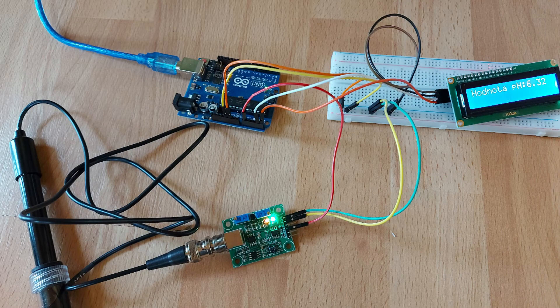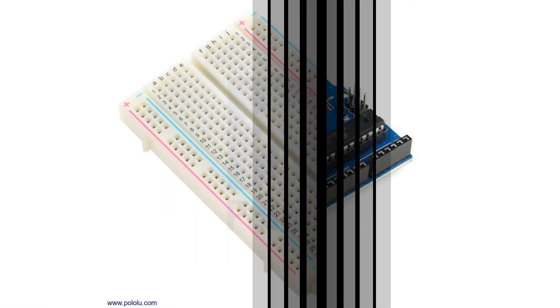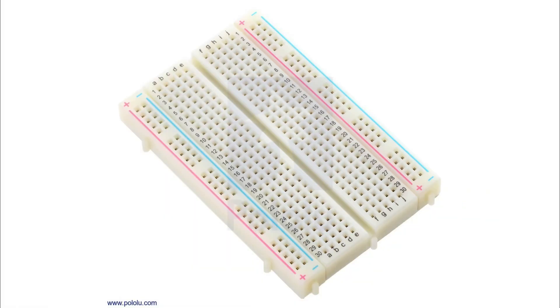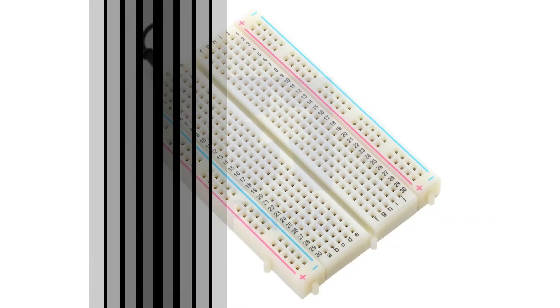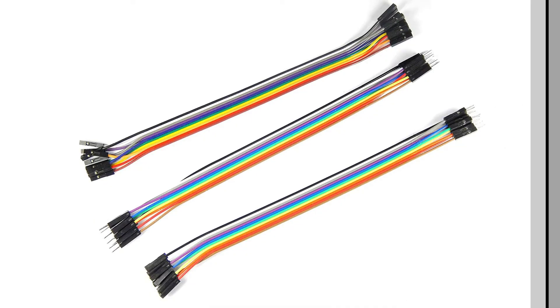Our experiment works on the principle of the previously mentioned digital pH tester, but it is our task to calibrate it using the pin on the adapter for the pH sensor. We will need the following components: an Arduino UNO control board, a breadboard, a pH sensor together with its adapter, an LCD display, and a couple of cables.